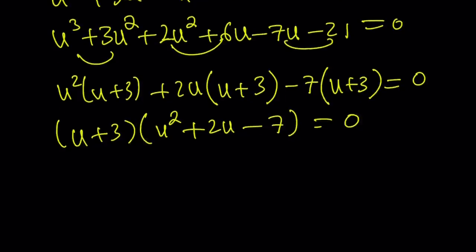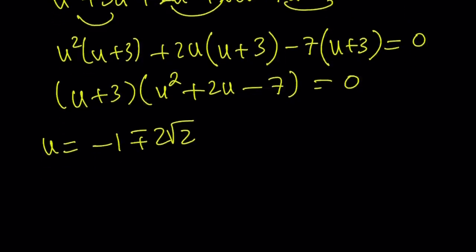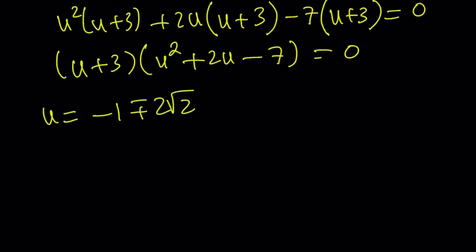And from here, u becomes negative 1 plus minus 2 root 2. I mean, easy to solve. You can definitely do it. But I would recommend add 7 to both sides and then add 1 to make a perfect square. I like completing the square for some reason. It's how you prove or you can prove the quadratic formula.